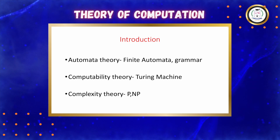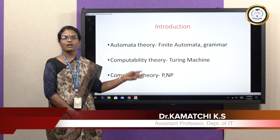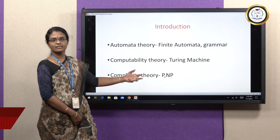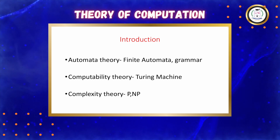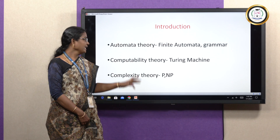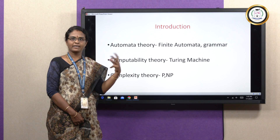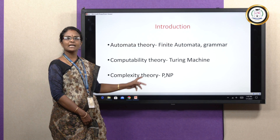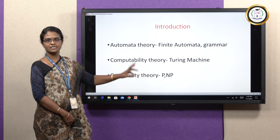The introduction of Theory of Computation consists of three theories. One is Automata Theory, which deals with finite automata, non-deterministic finite automata, deterministic finite automata, context-free grammar, and context-free languages. Next is Computability Theory, which deals with the Turing machine and mathematical calculations. And then Complexity Theory, which deals with class NP and class P problems — polynomial time and non-deterministic polynomial time.